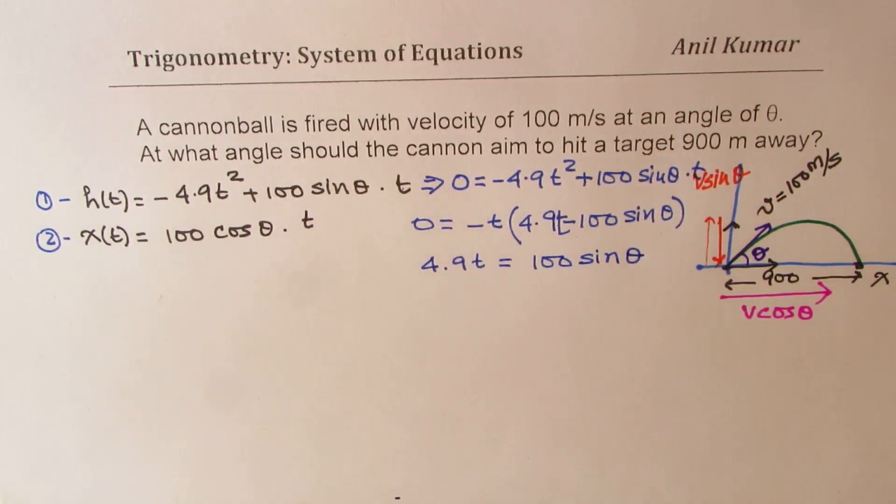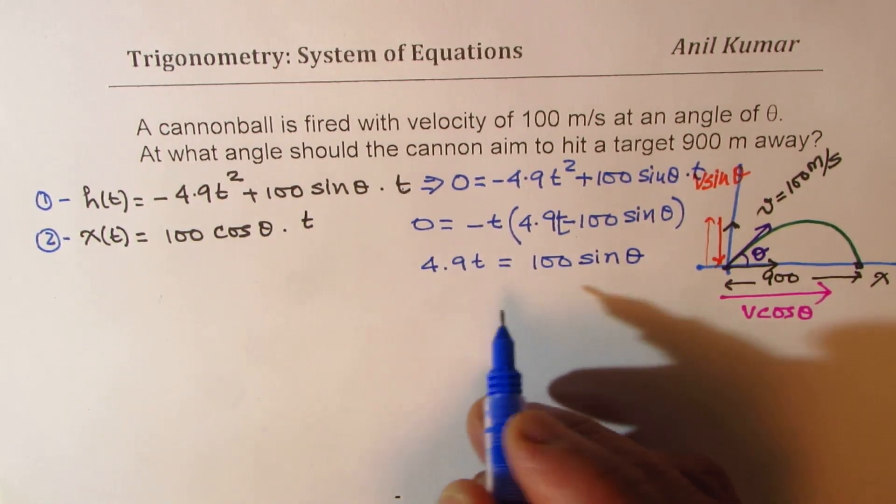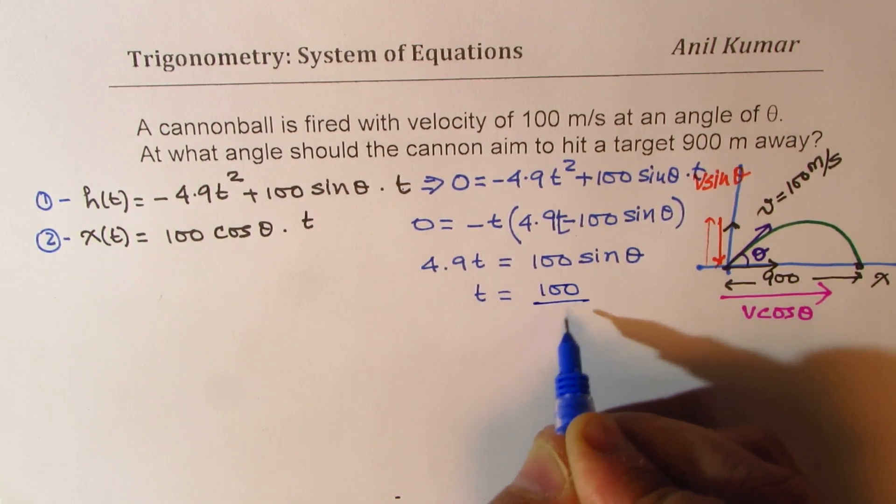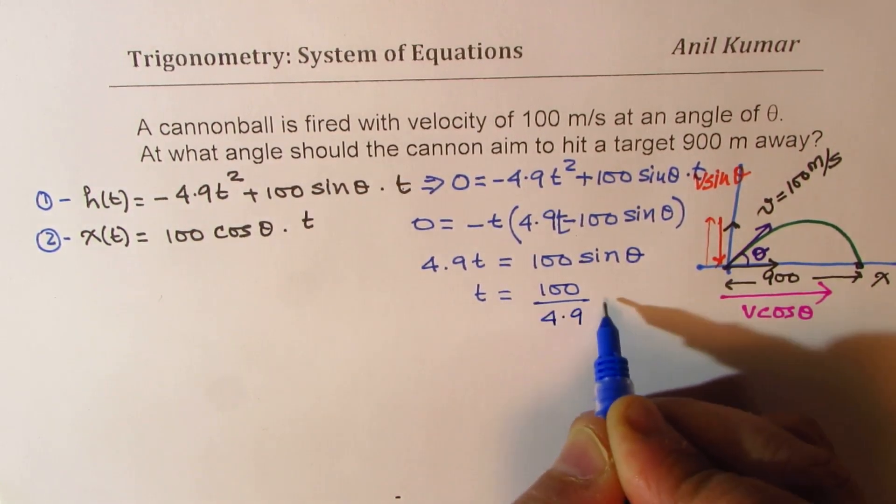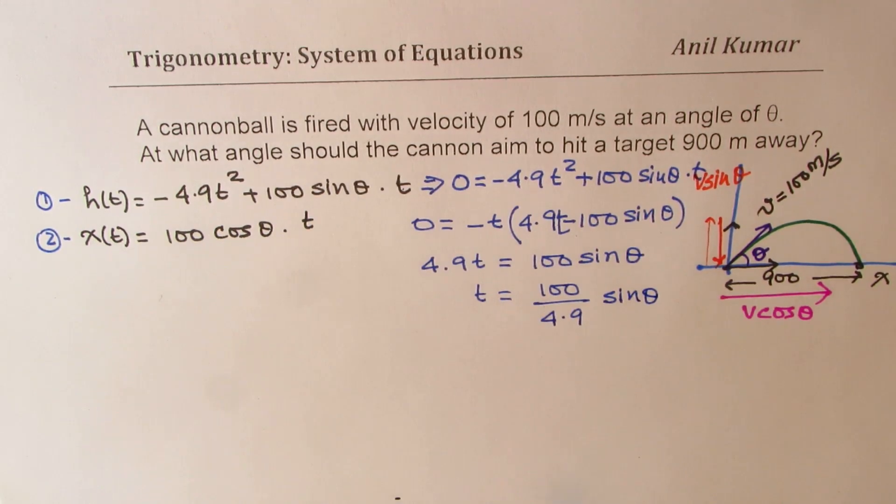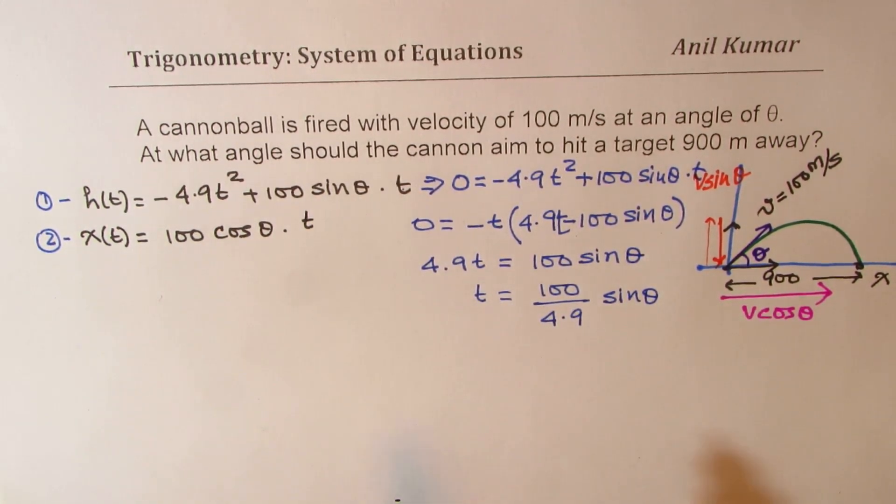So that is this time, right? So from here, you can write that time t is equal to 100 over 4.9 sin theta. So solving the first equation, we get time as 100 divided by 4.9 sin theta.